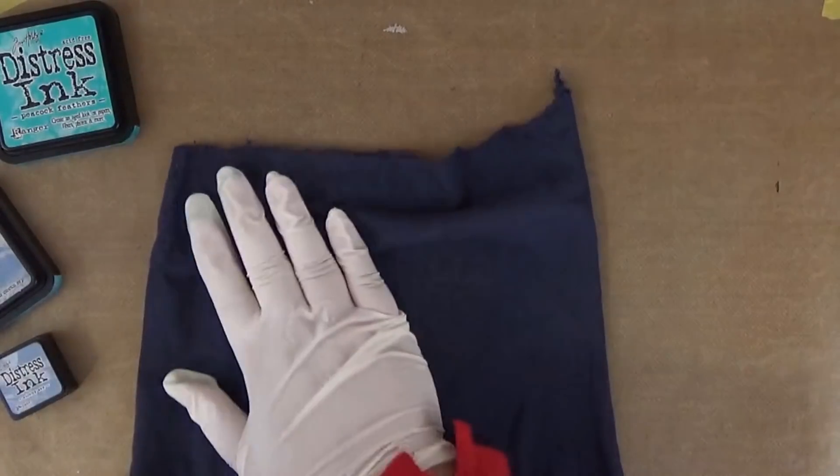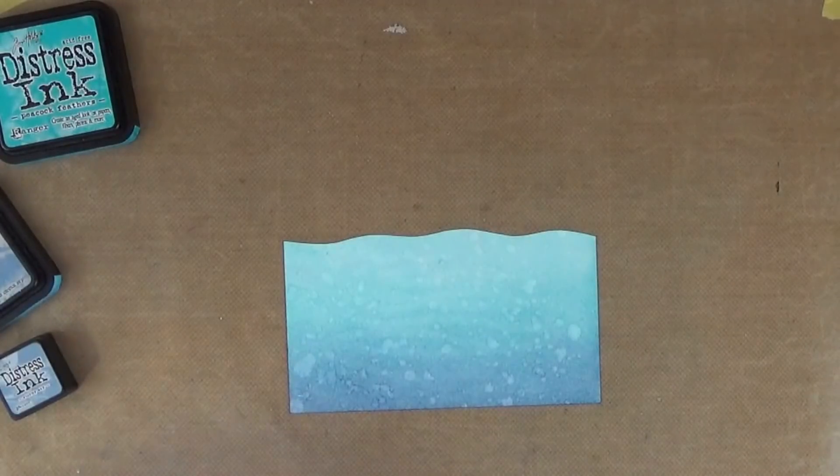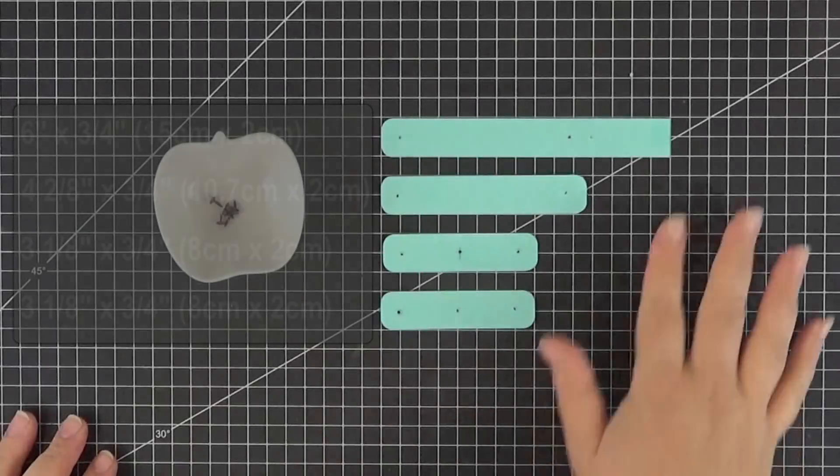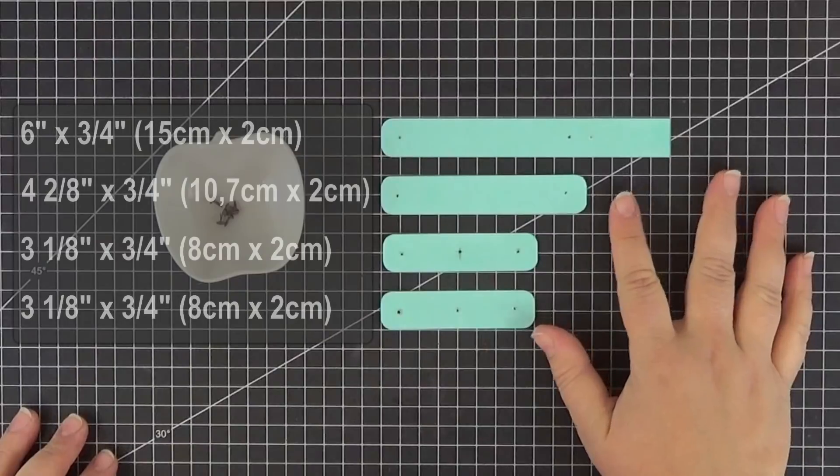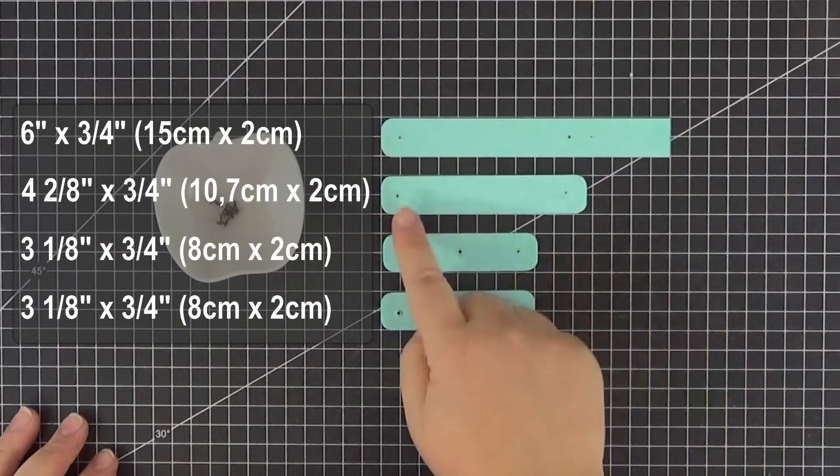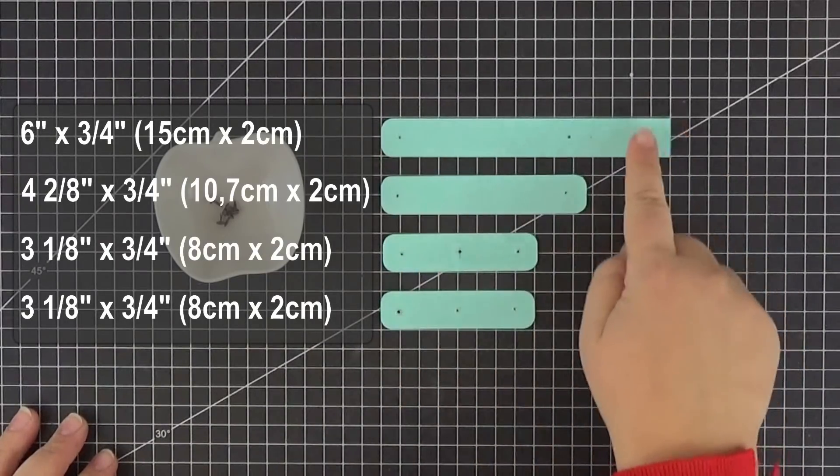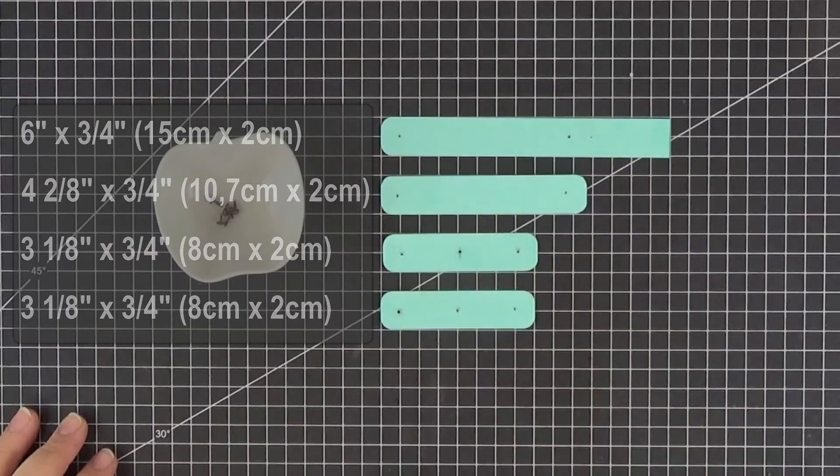I didn't want to get my fingers dirty, so I just used a pair of latex gloves to ink my panel. For the mechanism, I cut eight strips of heavyweight cardstock in measurements that you can see on your screen, layering two and two together with liquid glue.